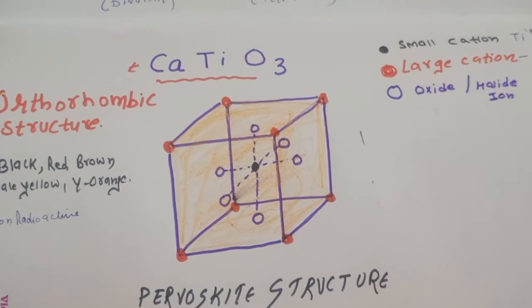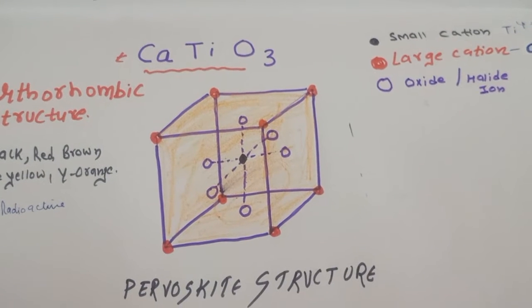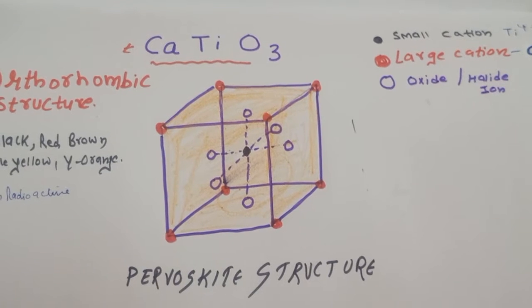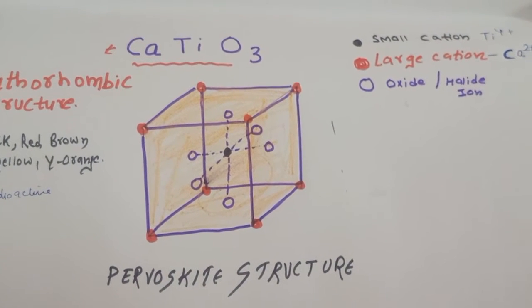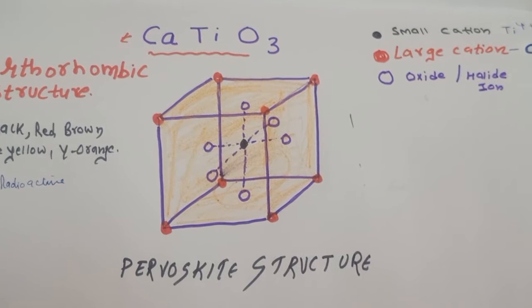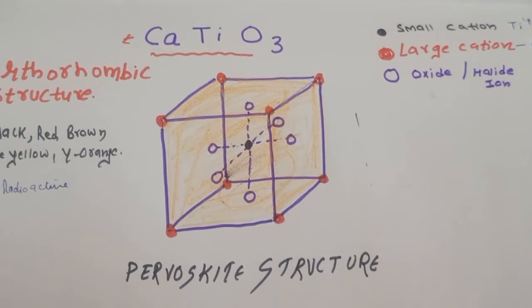First you see the structure. Here you can see in the center that is the black, so it is a small cation. This red are the large cation, and the empty hole I marked with the purple color is the oxide or the halide. Generally this example today of perovskite structure we have taken is CaTiO3.